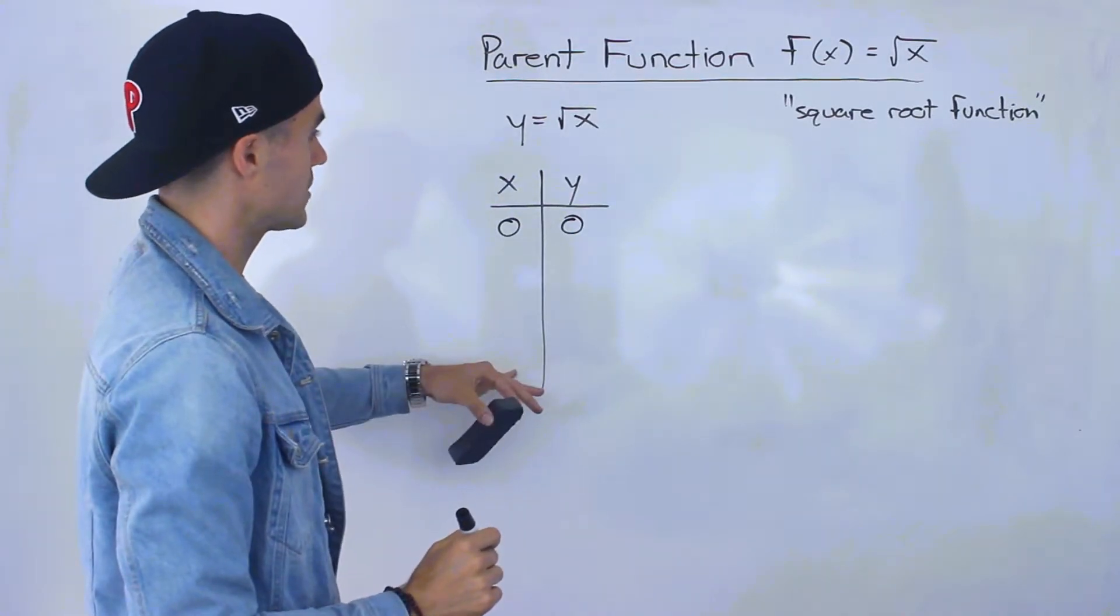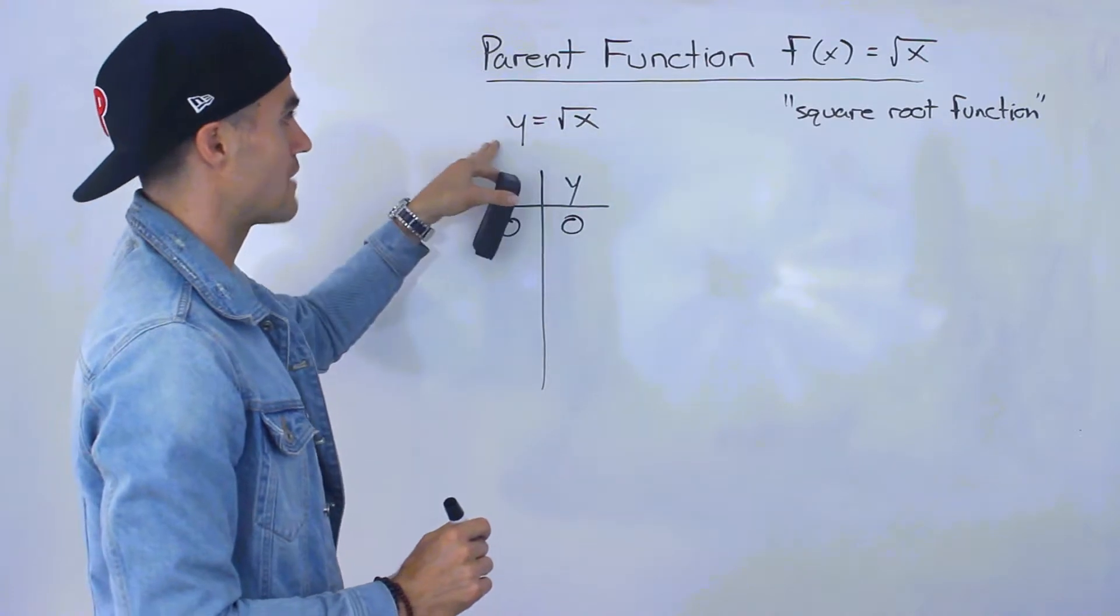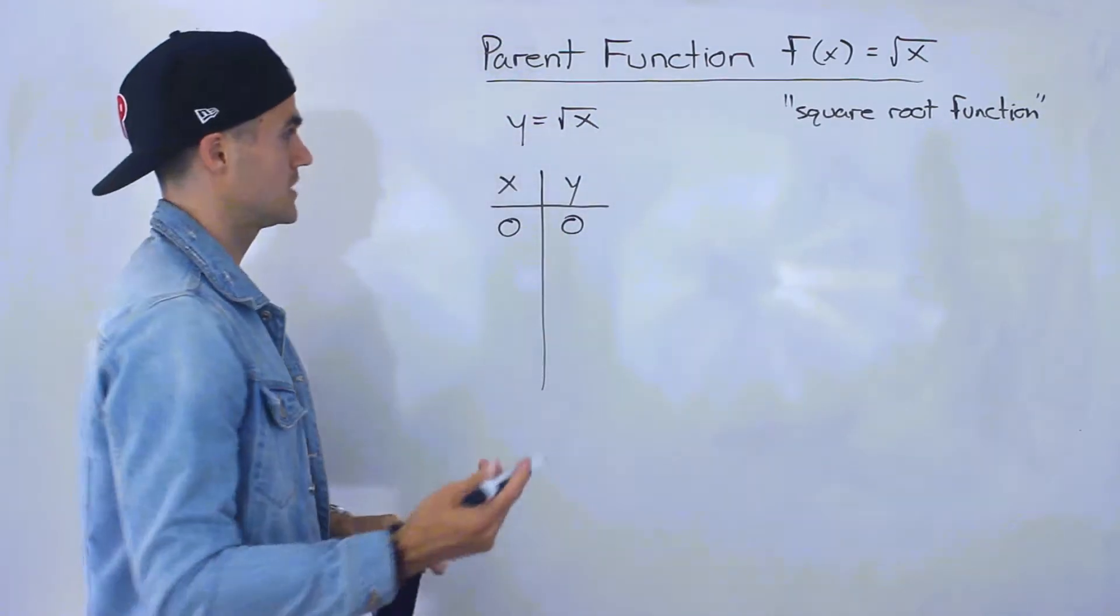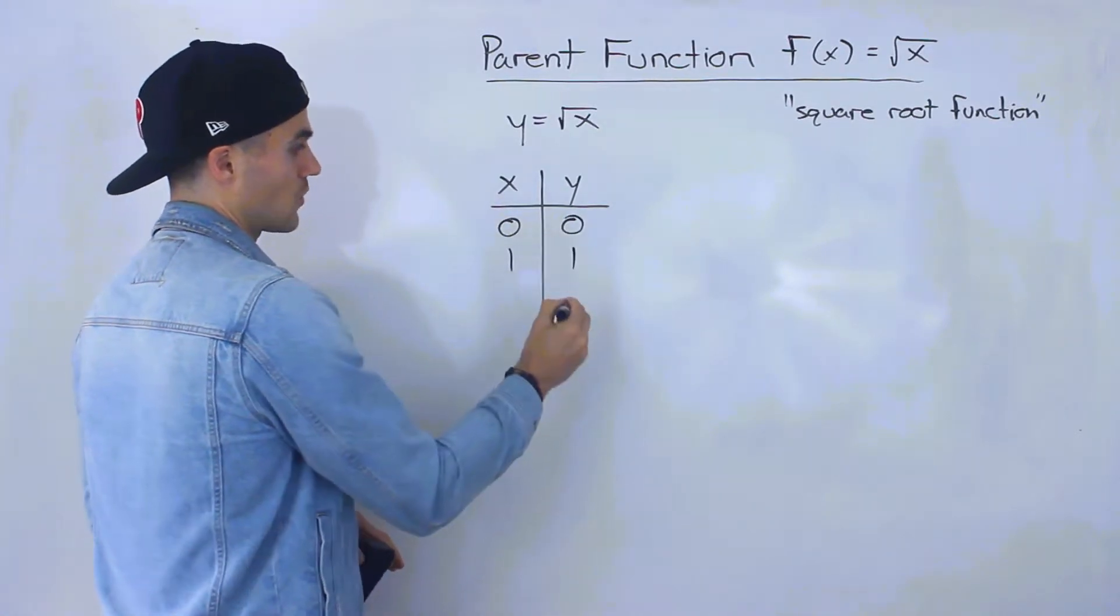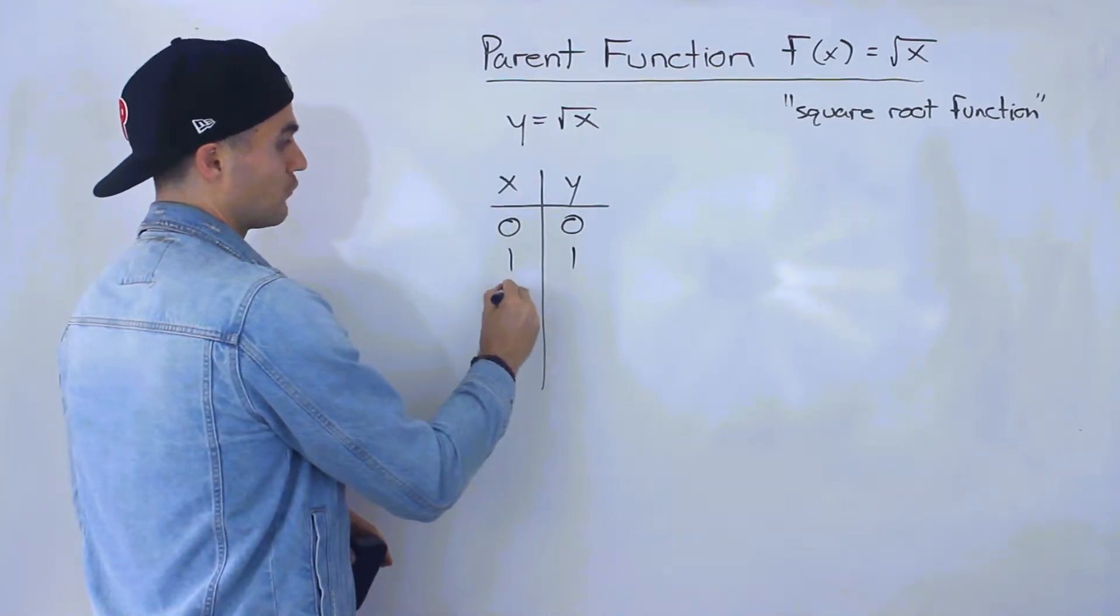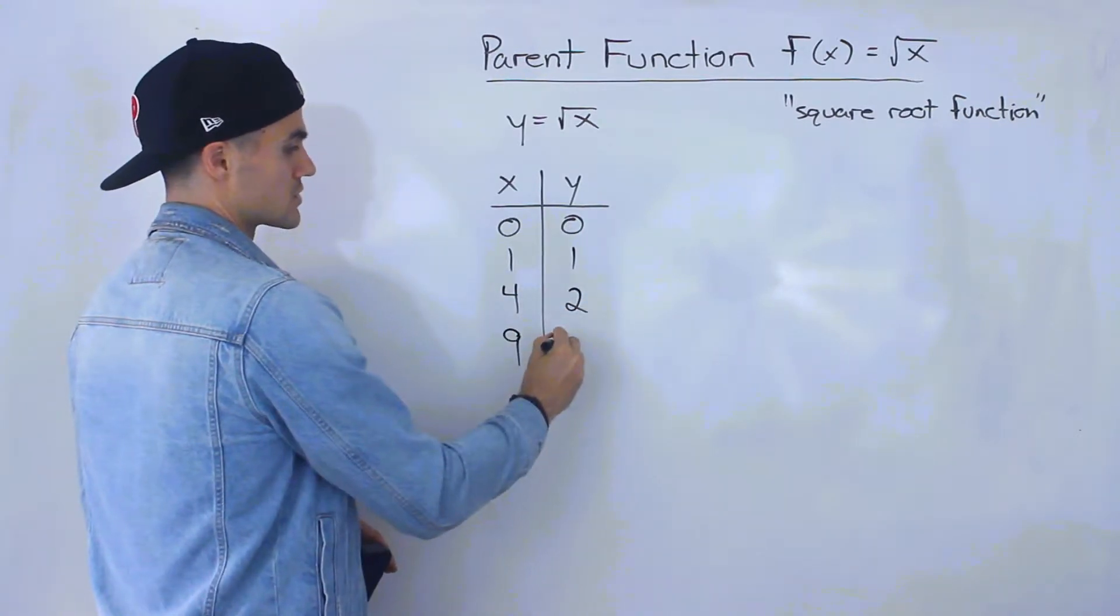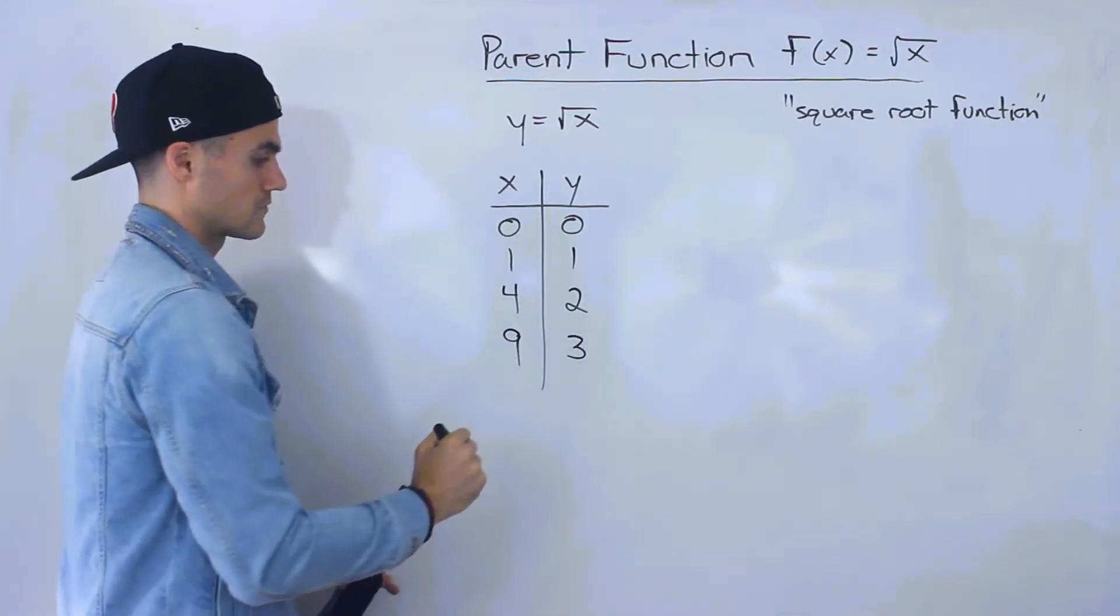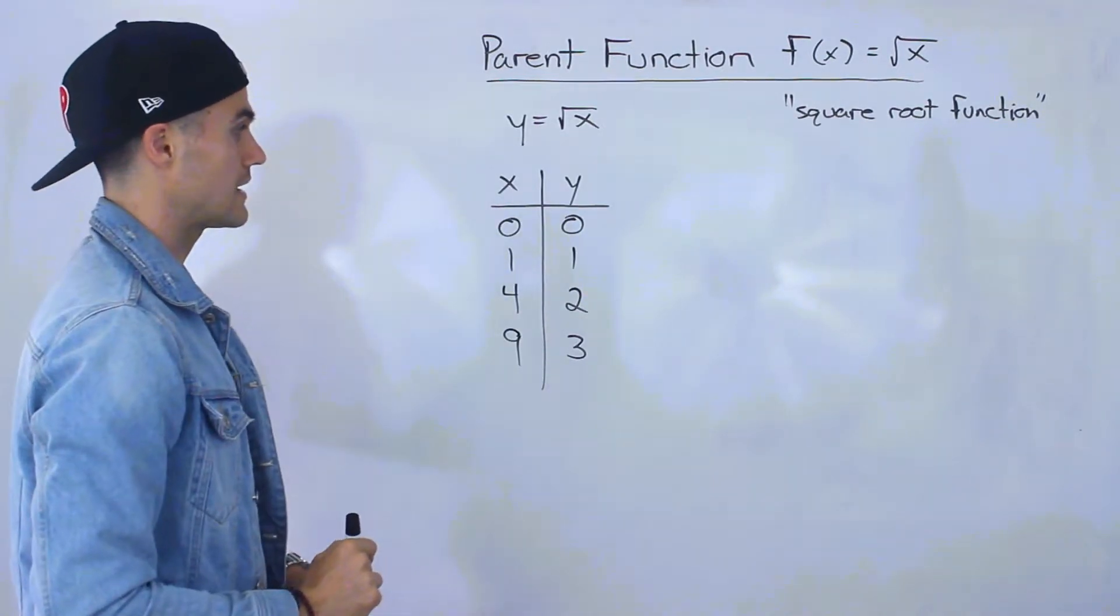So let's pick some x values here that make a smooth y value, meaning that when you square root them it's not going to be a decimal. So 1 would be one of them, square root of 1 is just 1. Another one would be 4, square root of 4 is 2. And then 9, square root of 9 is 3. And then you could do 16, 25, 36, but let's cap it off at 9.